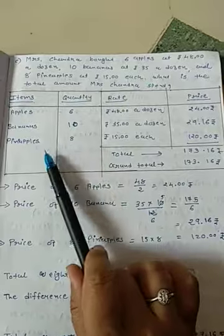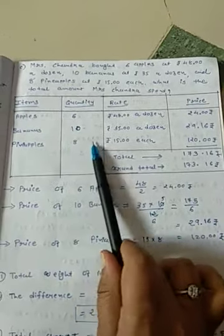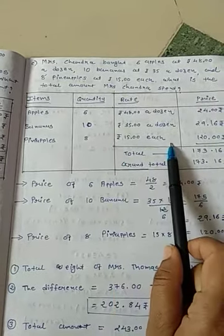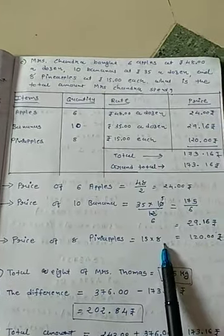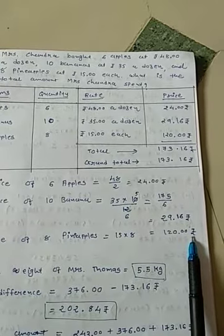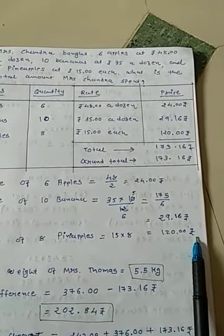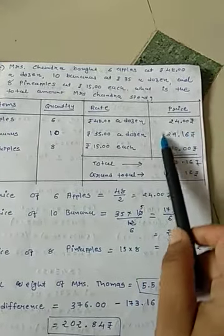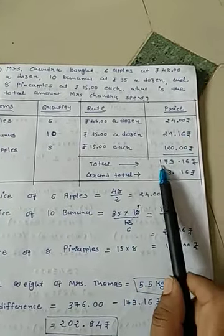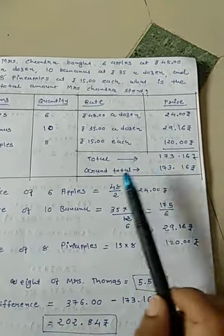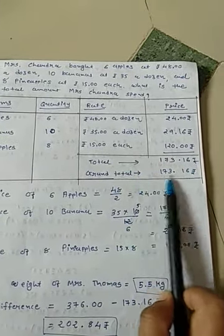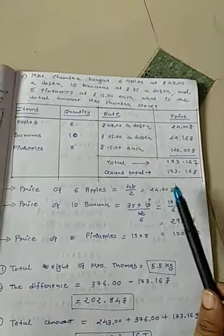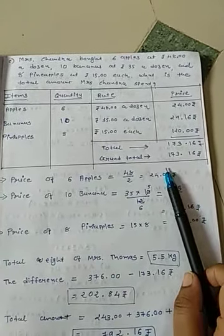Then after 8 pineapples — this is easy because the cost of each pineapple is given as Rs. 15. So just multiply 15 with 8 to get the cost of 8 pineapples, that is Rs. 120. So here 120 will come. Adding all 3 prices we get the total Rs. 173.16. Grand total is again similar because sales tax is 0. So this is the bill for Mrs. Chandra.